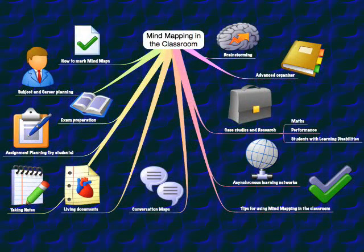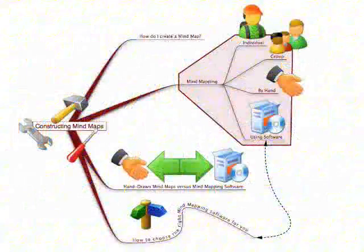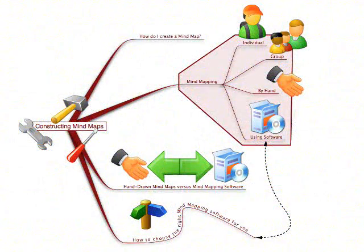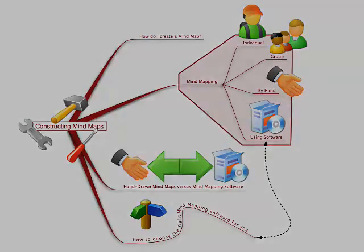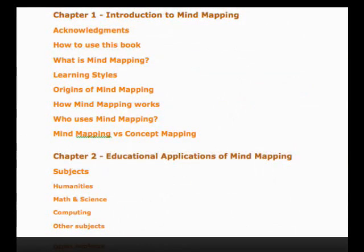Then add the body text to each branch as branch notes. Being in mind map format, you're not restricted to writing sequentially — you can add the body text in any order you like. When you're ready, you can export the mind map document with all the chapter mind maps into Microsoft Word format, and all the branches and sub-branches will come out as outline levels within the document, with the branch notes coming out as body text.